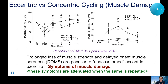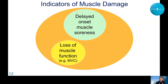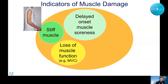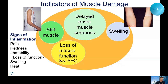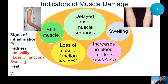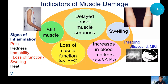Prolonged loss of muscle strength and delayed onset muscle soreness (DOMS) are peculiar to unaccustomed eccentric exercise and are considered symptoms of muscle damage. These symptoms are attenuated when the same exercise is repeated — called the repeated bout effect. Indicators of muscle damage include DOMS, loss of muscle function, inflammation, stiffness, swelling, pain, and increasing blood markers such as creatine kinase and myoglobin. Muscle damage can also be imaged by ultrasound (increased echo intensity) or MRI (increased T2 relaxation time).